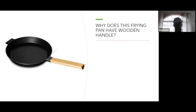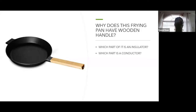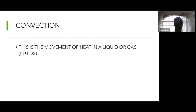If the entire frying pan were made of metal, you'd have to use a cloth or oven mitts to remove it from the stove — and those are also insulators. Insulators do not allow heat to pass through easily, so this is a practical everyday example of how conductors and insulators are used together.